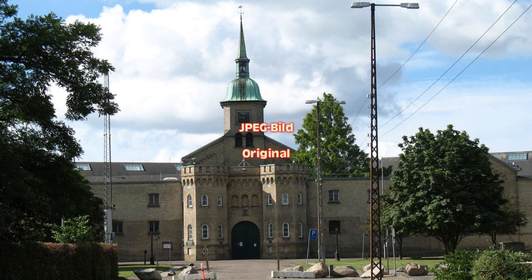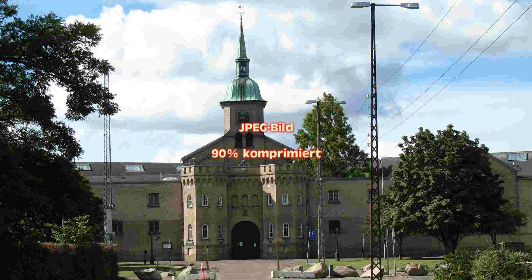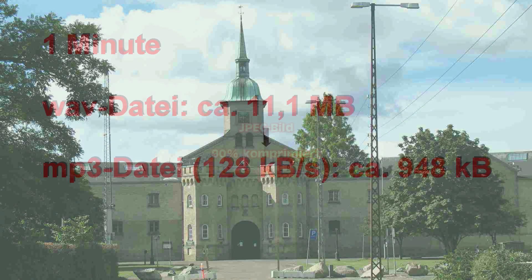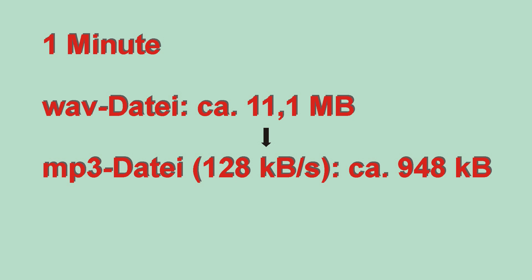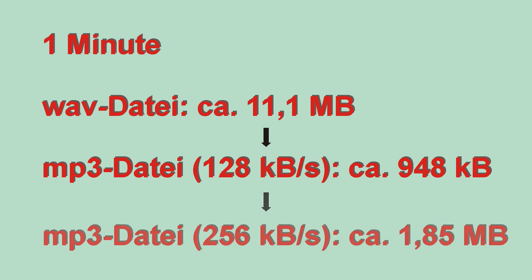This kind of lossless compression works, but not always so well. In a photo with very varied content, you can barely achieve such compression. Therefore, one falls back on other compression methods which are lossy. From a so-called lossy file, you cannot get back the original data. Therefore, it does not make sense to convert an MP3 file with a data rate of 128 kilobytes per second into a file with 256 kilobytes per second — the quality will not be better, we only get a larger file.